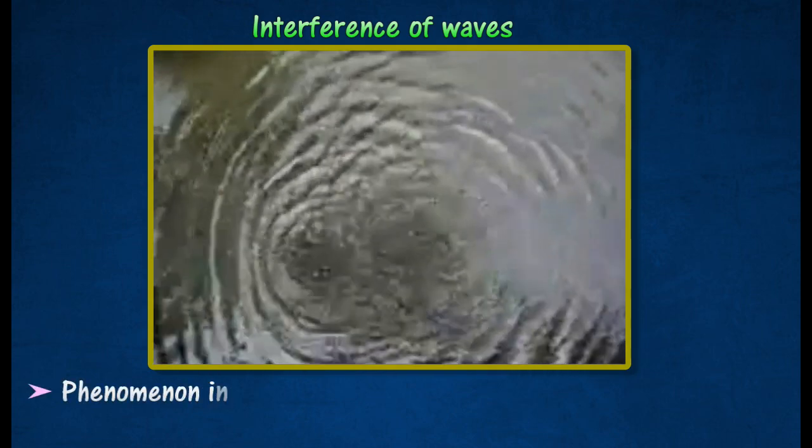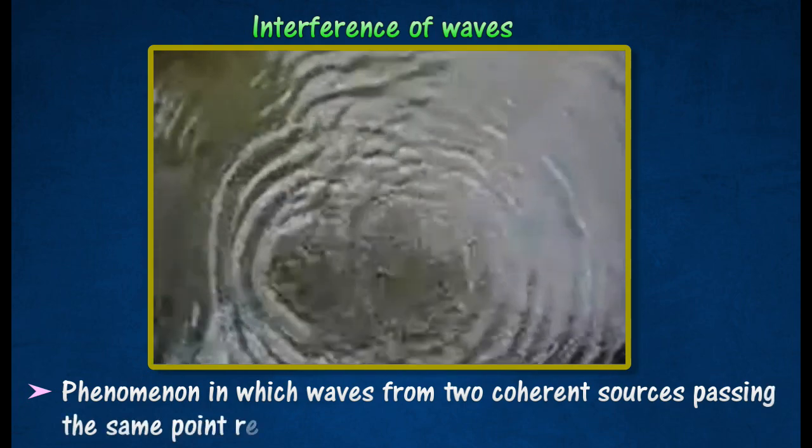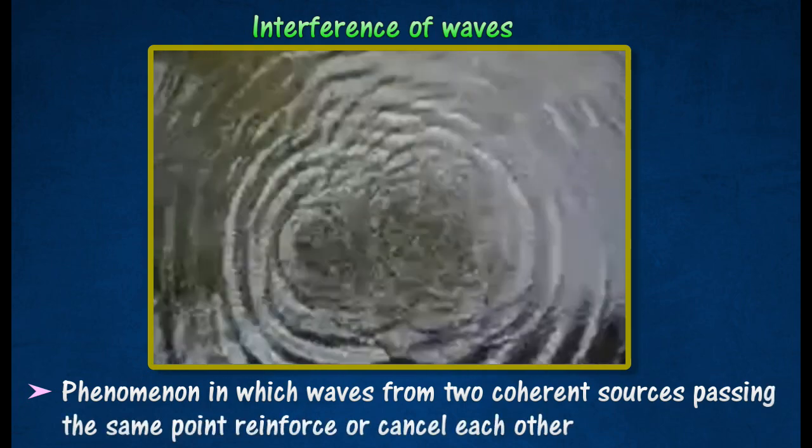Interference is a phenomenon in which waves from two coherent sources passing the same point reinforce or cancel each other.